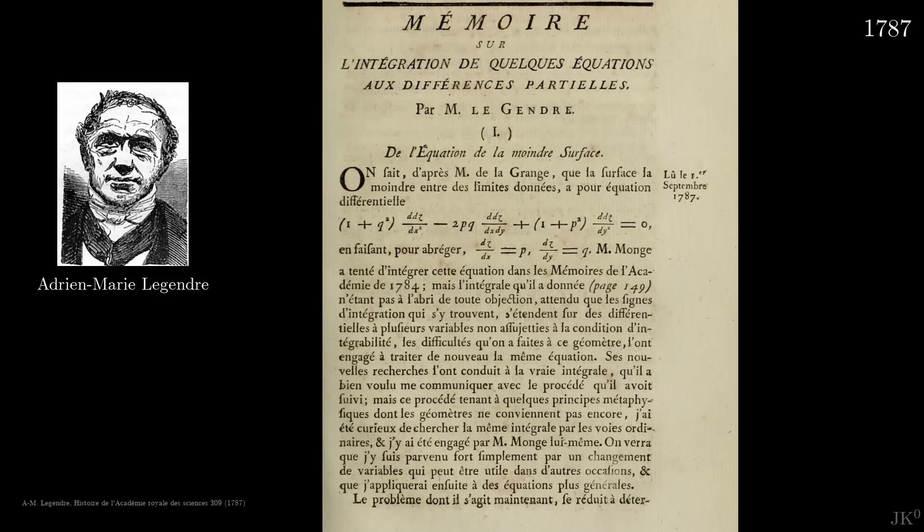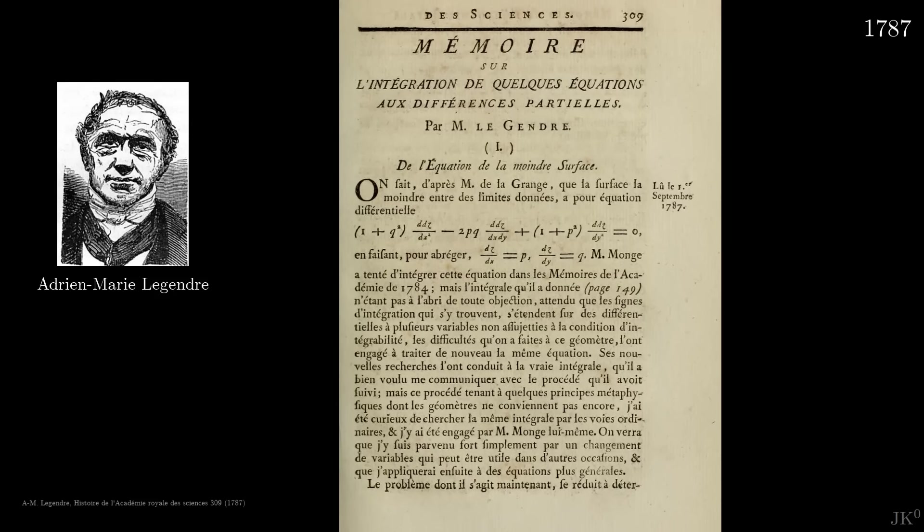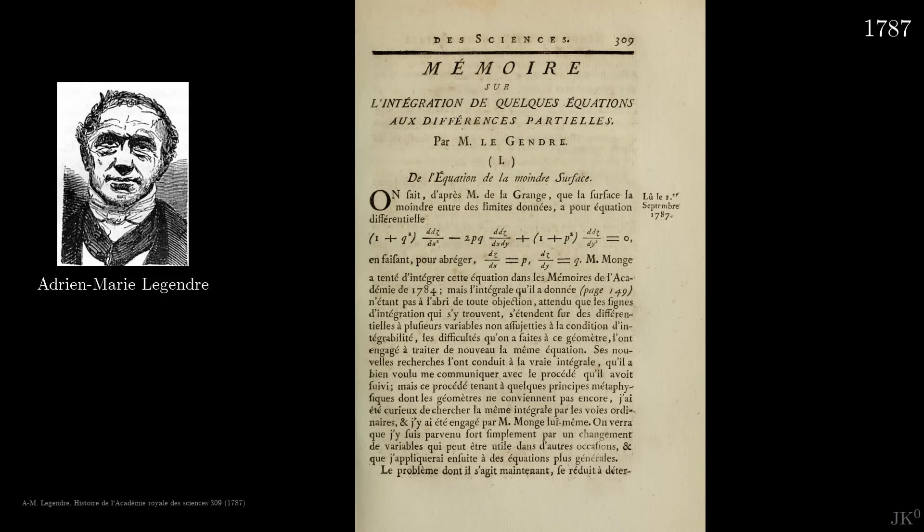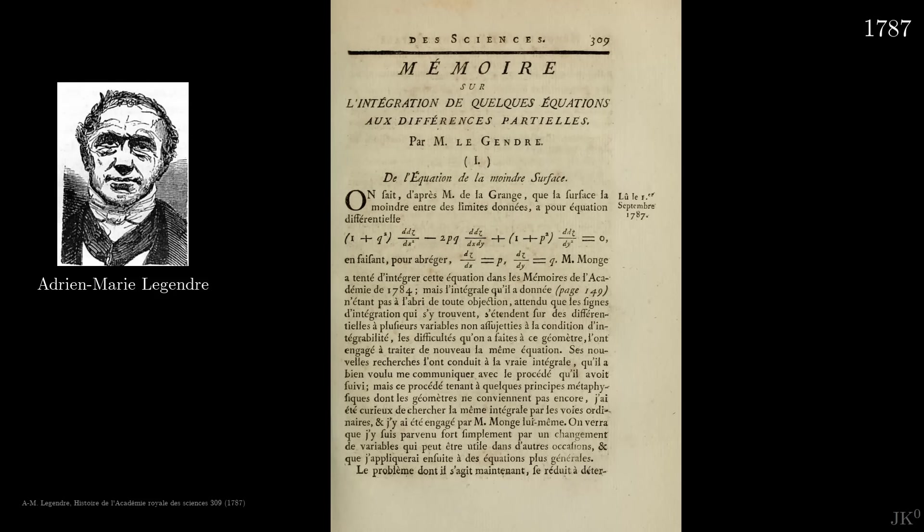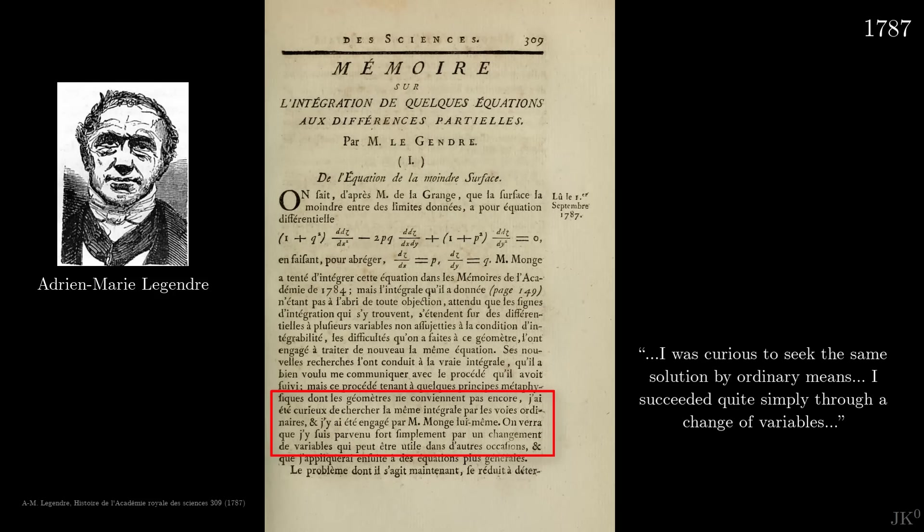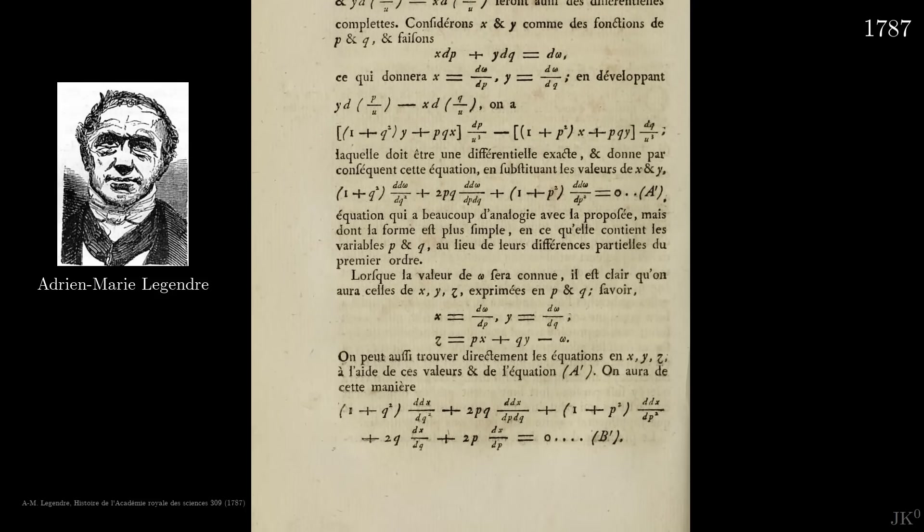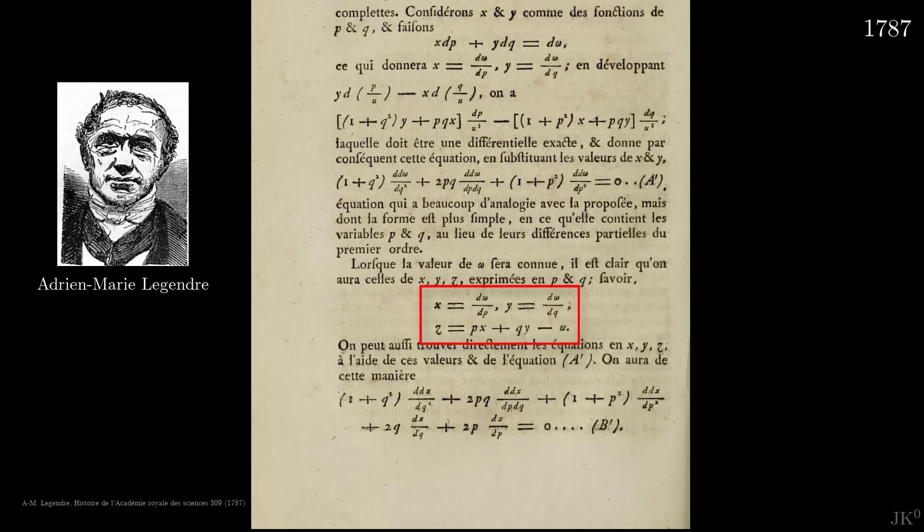This is Adrien-Marie Legendre, distinguished French mathematician, that in 1787 published this paper, introducing a novel change of variables to solve partial differential equations. His work was completely unrelated to mechanics. In fact, he introduced his idea as a trick to solve a particular equation proposed by Lagrange about surfaces in geometry. The equation had already been solved using unfamiliar and tedious methods, and as Legendre writes, 'I was curious to seek the same solution by ordinary means. I succeeded, quite simply, through a change of variables.' Using the proposed transformation, Legendre found that the second order differential equation that he was studying reduces to an equation of the first order instead.